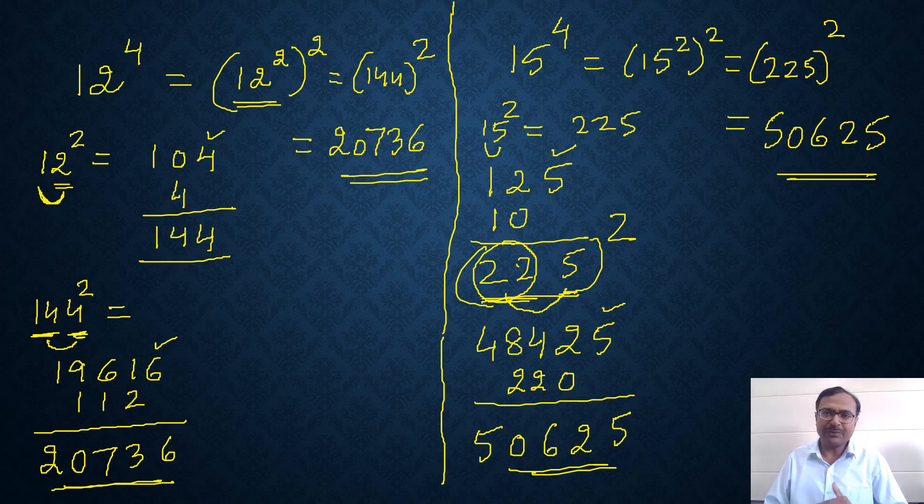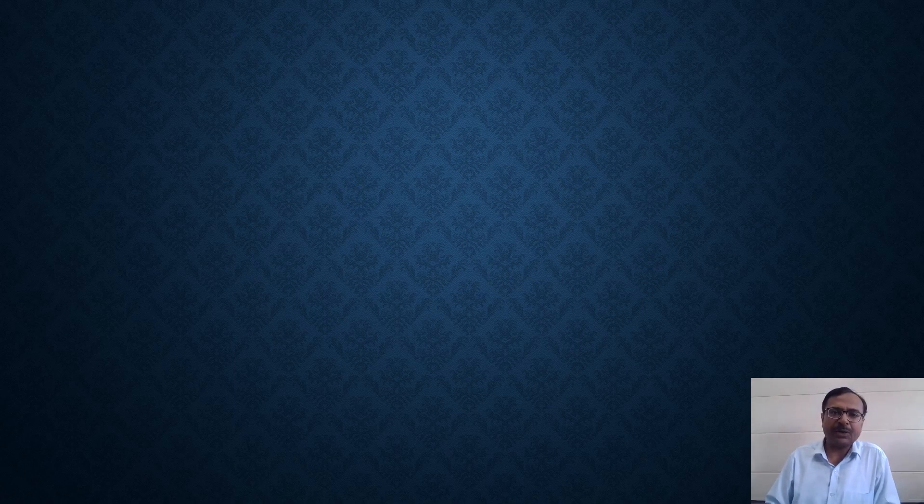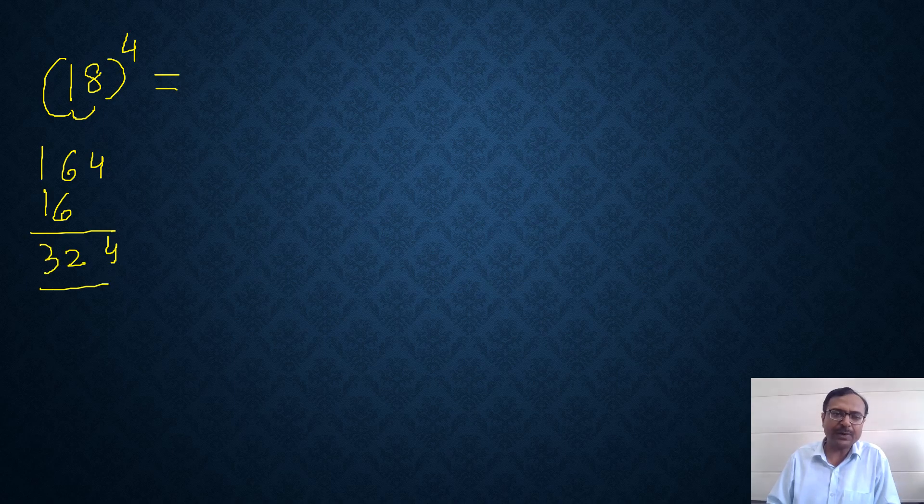Now when I demonstrated the second question to you, the question was far more easier and it consumed lesser time because this was the second time I was doing this demonstration. Let's see another question and let's see whether we can actually reduce that timing or not. So I'll do 18 raised to power 4. I'm complicating things here and let's hope we can solve this in lesser time. So 1 square is 1, 8 square is 64, 1 into 8 is 8, the double is 16. So add vertically, you get 324 as the square of 18.